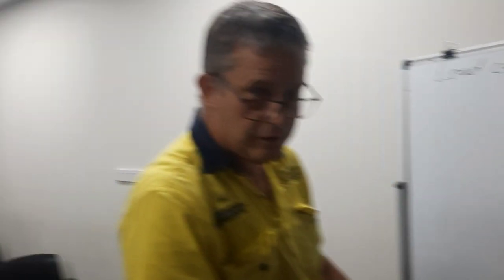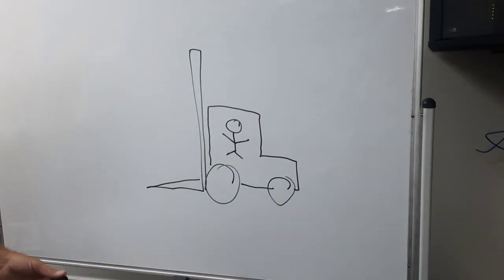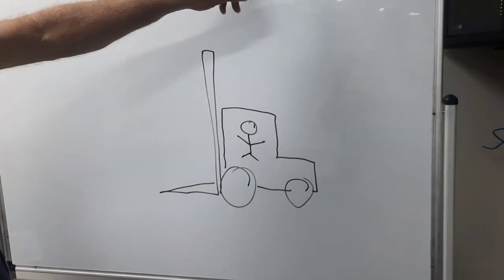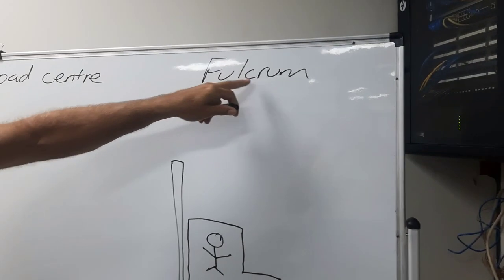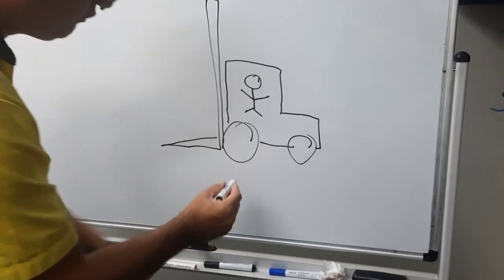Now, there's our forklift today, it doesn't really look the same. Now, when it comes to fulcrum, fulcrum is literally where the front wheel touches the ground.